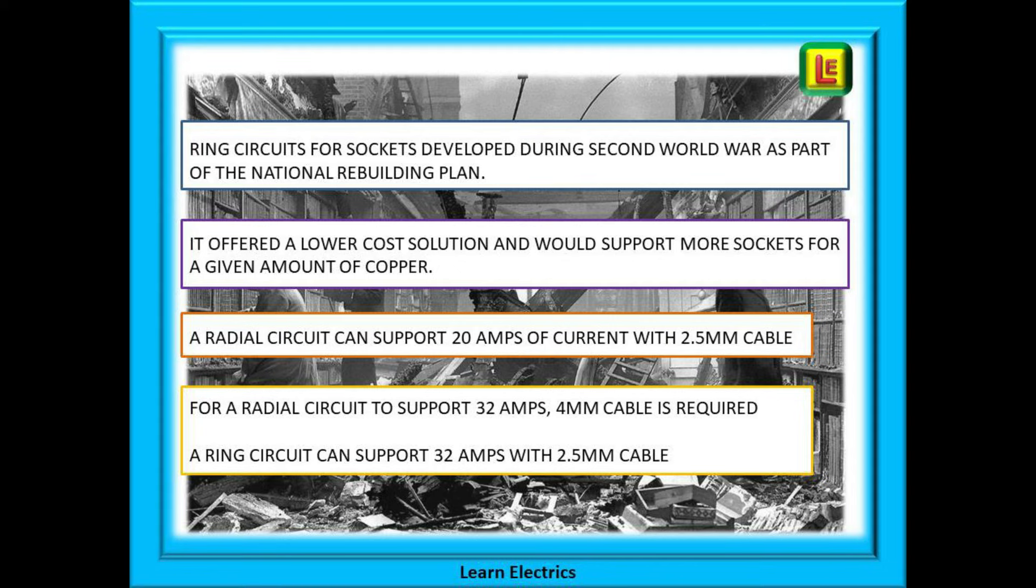But with a ring circuit, a 32 amp breaker can be installed safely on 2.5 millimeter cable, saving a lot of copper.